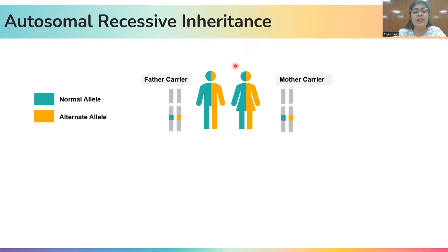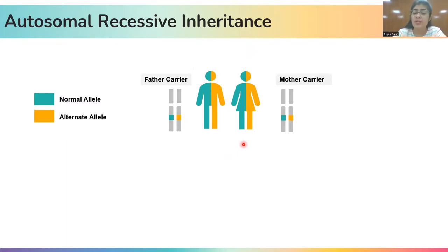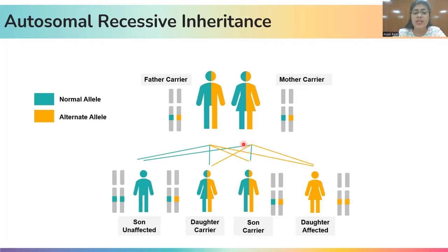To begin with, let us revise the basic difference between autosomal recessive and autosomal dominant inheritance. In the case of autosomal recessive inheritance, if the parents are carriers for a disease or a trait — carrying one normal allele and one alternate allele — then there can be three scenarios possible for the child: the child can be unaffected, the child can be a carrier just like the parents, or the child can be affected.